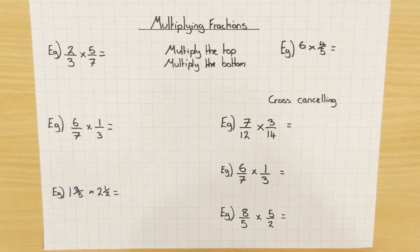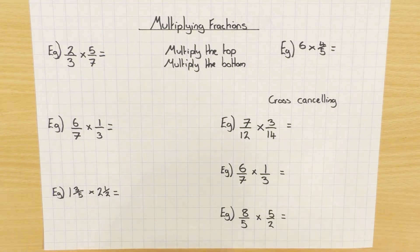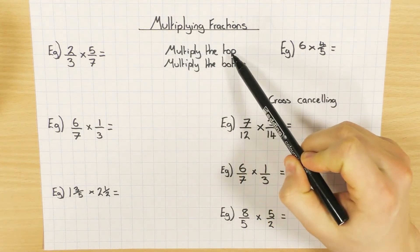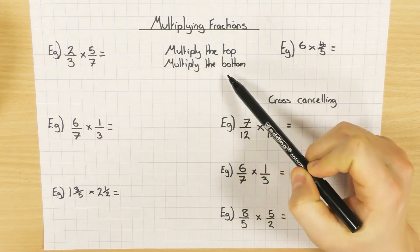Okay guys, in this video we're going to have a look at how we multiply fractions. Multiplying fractions is definitely the easiest one of the four operations, because all we do is multiply the top numbers and multiply the bottom numbers.